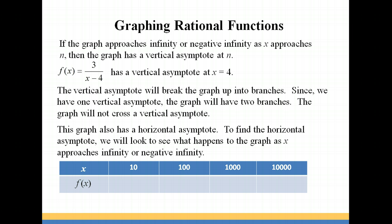So plugging in 10 into 3 over x minus 4, our output is 1 half. Plugging in 100, we get out 1 over 32. At 1,000, we have 1 over 332. And at 10,000, we have an even smaller number at 1 over 3,332. So as x goes to infinity, our graph heads towards 0.